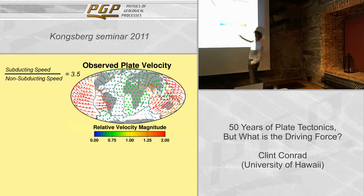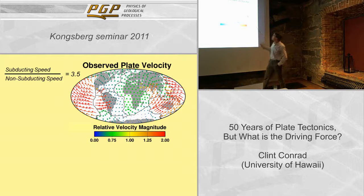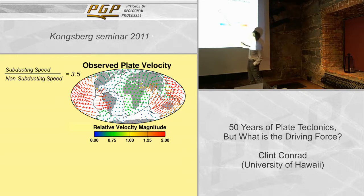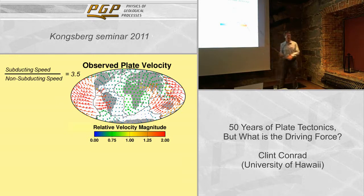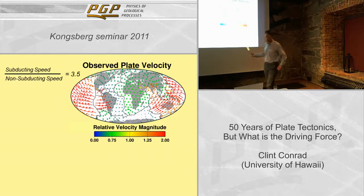The world is really divided into two groups: the Pacific side with plate motions going about twice as fast as average, and the Atlantic side going about half as fast. The ratio means that plates with subduction zones — Nazca, Pacific, Indian, and Australian — are going about three and a half times faster than the plates without subduction zones. That right there tells you that slabs are very important for driving plate motions.